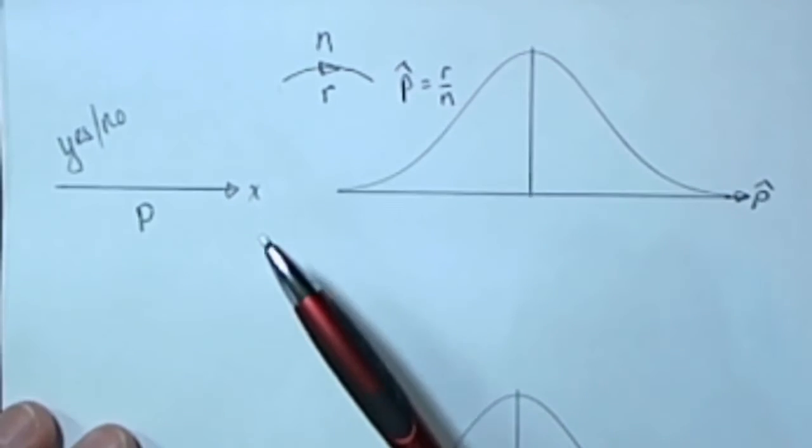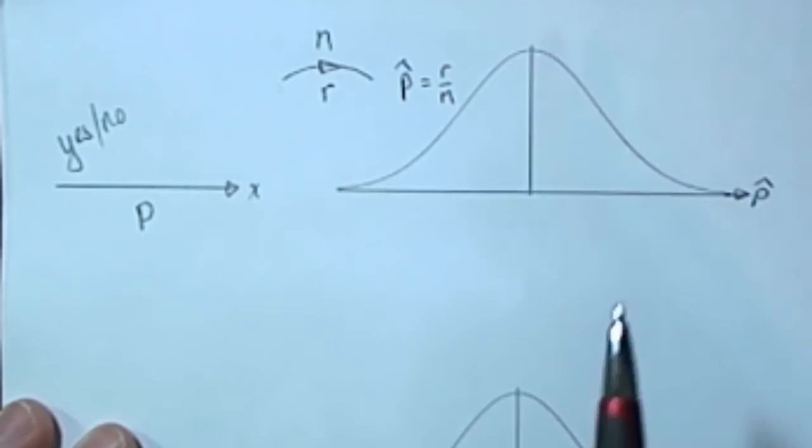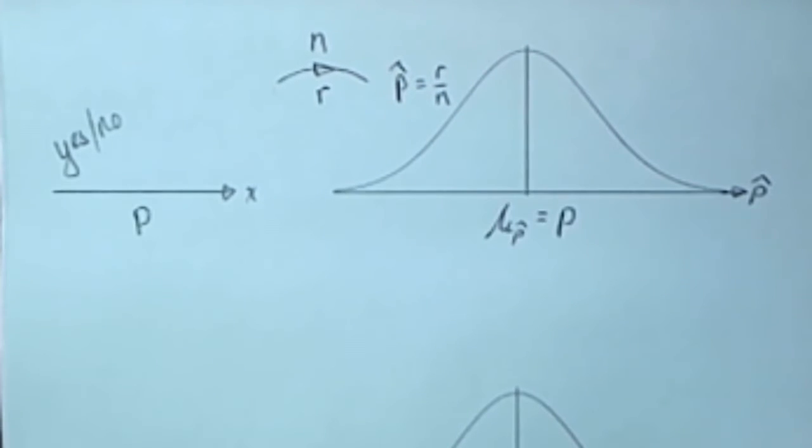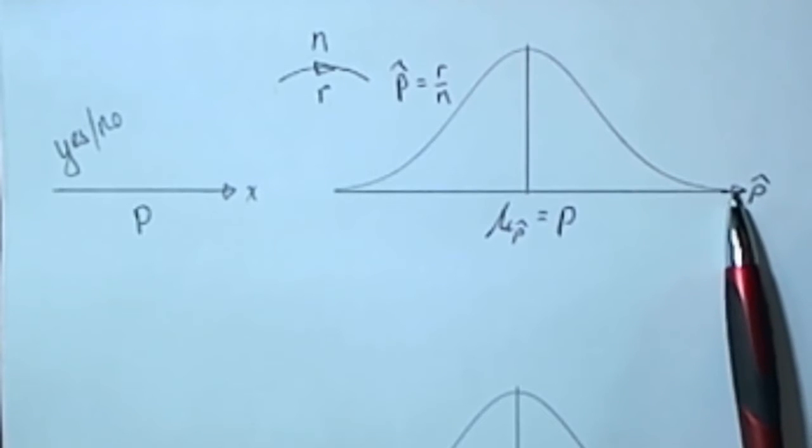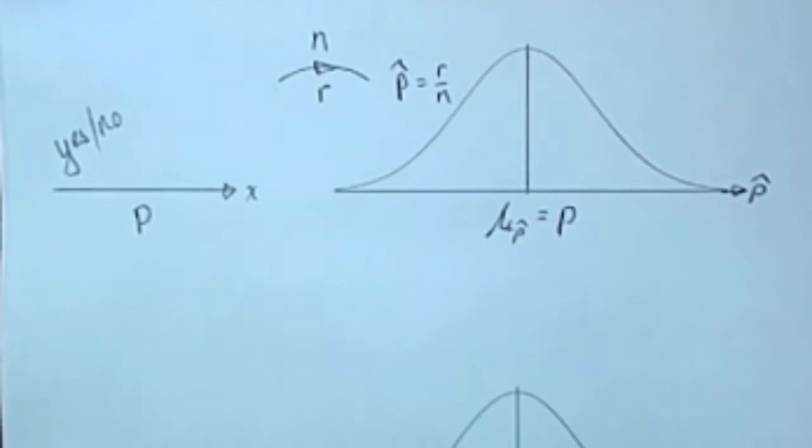It is known that under pretty mild conditions this distribution of sample proportions will be normally distributed. Not only that, the mean of this distribution of sample proportions will be equal to the proportion of the original population.